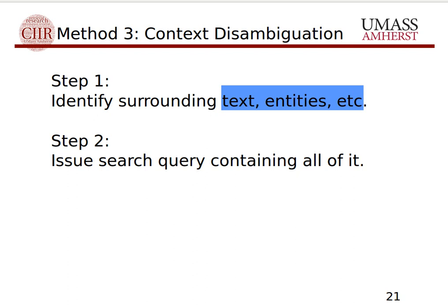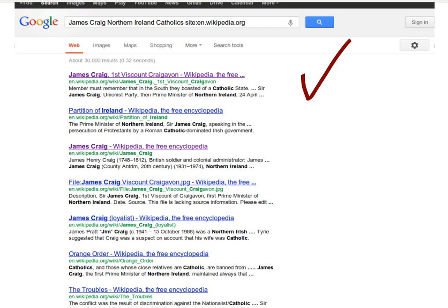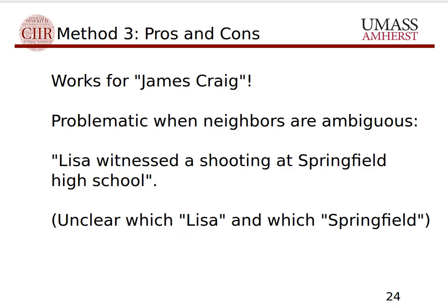The problem is we only look at the name and don't really leverage the context. Here's a very simple method: first identify the text and entities that surround the query mention, then comprise a big search query containing all of it and issue it against Google. In our example we have the query mention, different name variants found with coreference, and other neighboring entities like Northern Ireland and Catholics, plus the sentence terms. We search for 'James Craig' with the name variants, neighbors, and sentence, and yes — it puts the right James Craig, the first Viscount Craigavon, on top of the ranking.